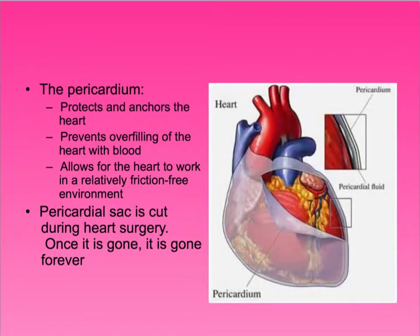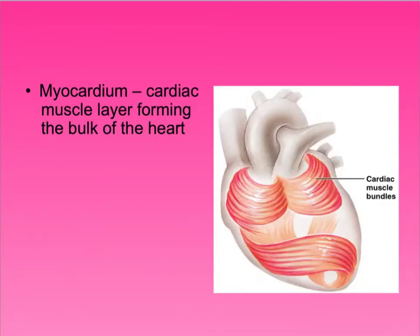The myocardium is the cardiac muscle forming the bulk of the heart. If you look at the fibers, they don't look like what most people think the heart looks like. This causes the heart to actually twist when it's beating — it's not simply squeezing top to bottom. The bottom half is actually twisting and shooting blood out to the aorta.